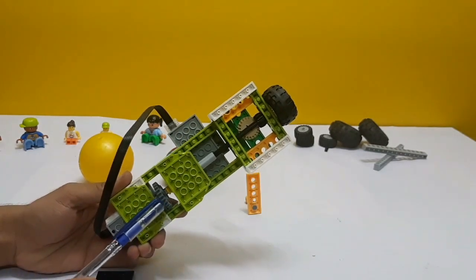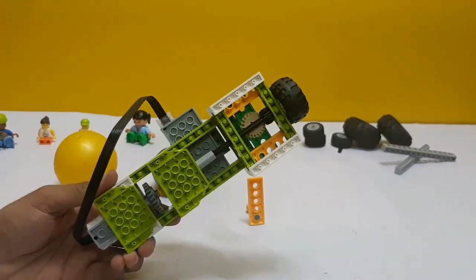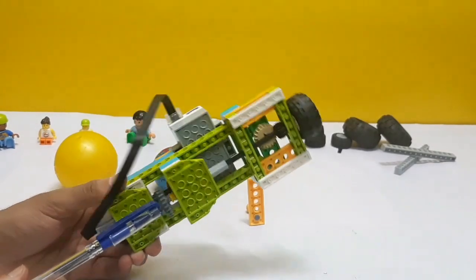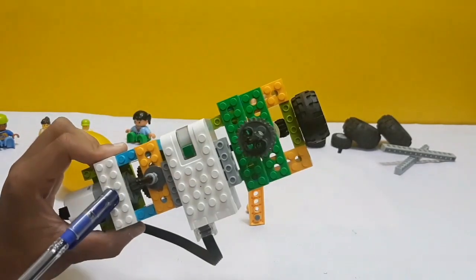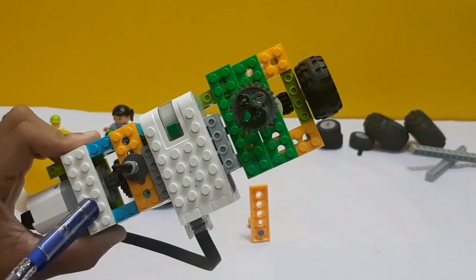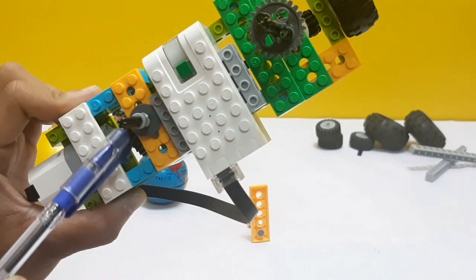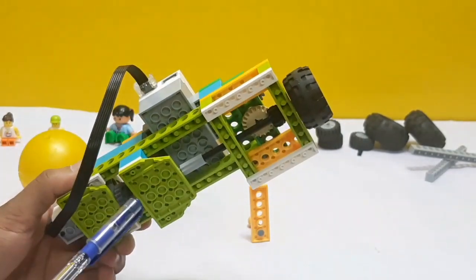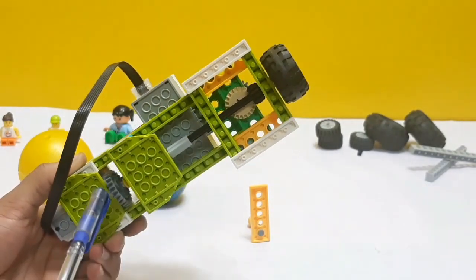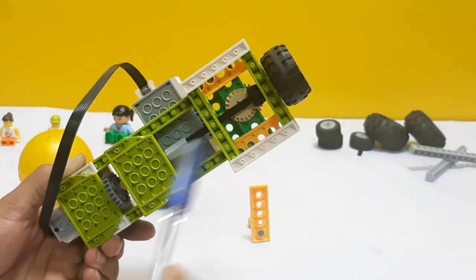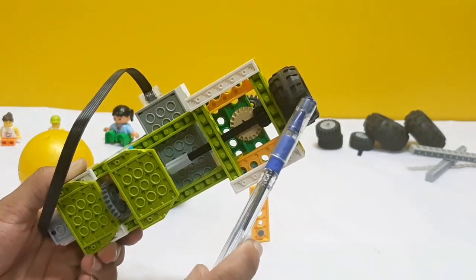You can see here, this is a 24-tooth gear. And this 24-tooth gear is meshing with the 8-tooth gear which is connected with the motor. Yeah, you can see here. This 8-tooth gear is meshing with the 24-tooth gear and we have connected a common axle passing through this and joined with this tire.